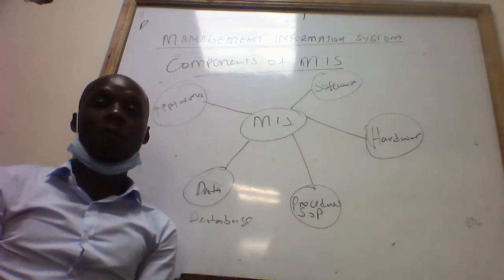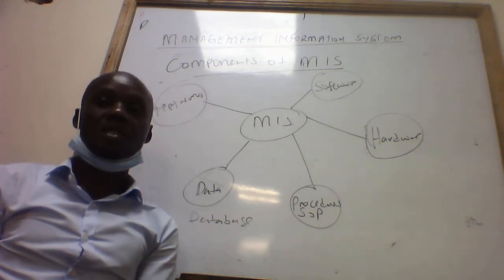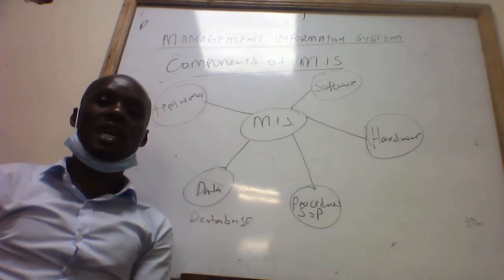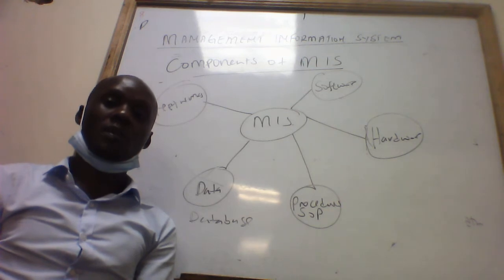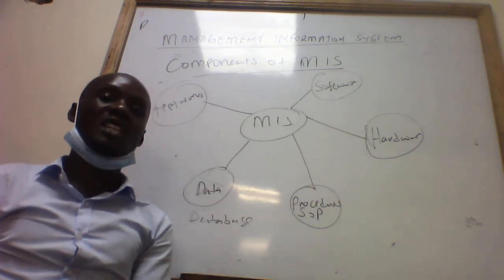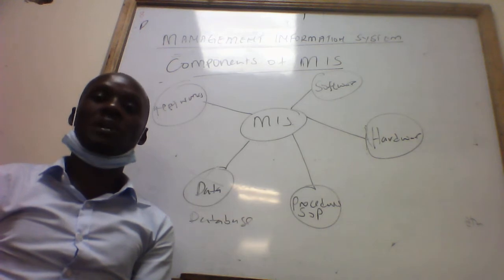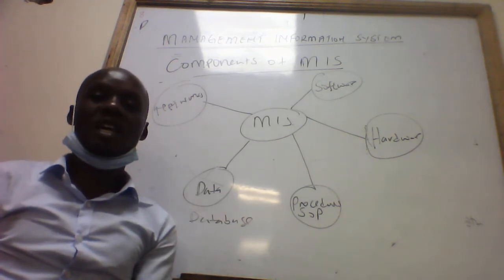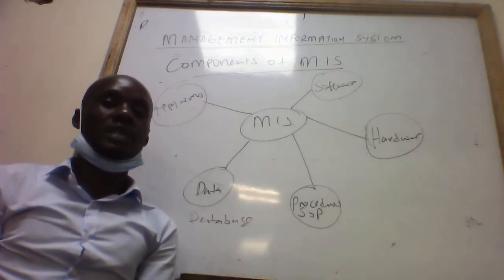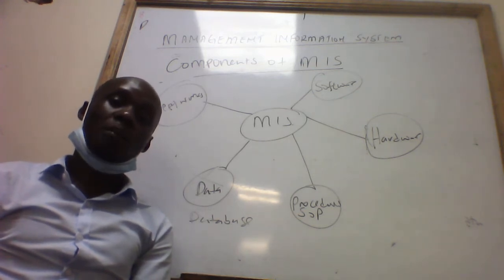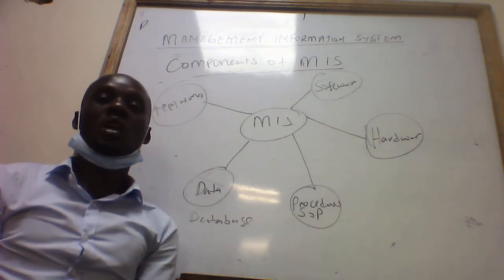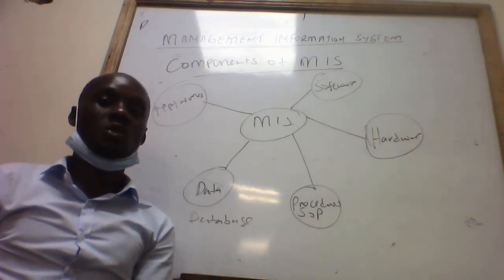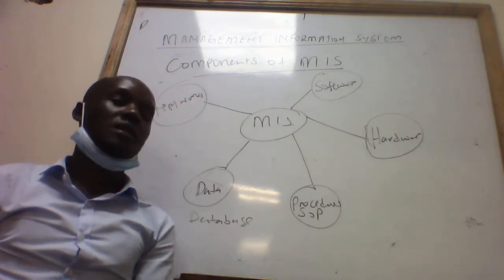A firm must have branches and departments, and each and every department has a right to access and utilize the management information system. The work of procedures defines how each individual, each personnel, and each department or functional area has access to this particular information system. So there are policies, regulations, and procedures that guide users on how they utilize the resources of a management information system.